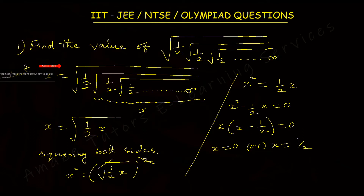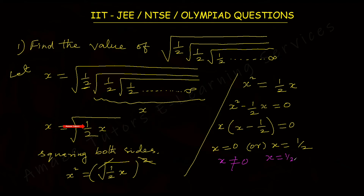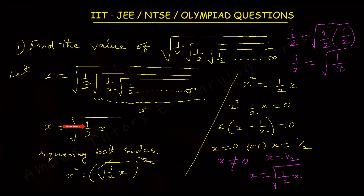Now let's substitute and check which value of x is true for the given expression. x equals 0 is not possible. Substituting x equals 1/2: on the left side we have 1/2, and on the right side 1/2 times 1/2 gives square root of 1/4, which equals 1/2. So 1/2 equals 1/2, which is true. Therefore, the value of the given surd is 1/2. This is the answer for this question.